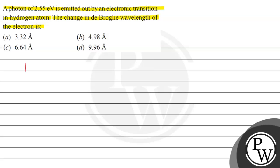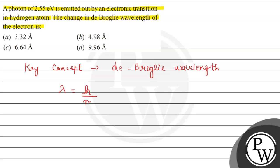Let us discuss the concept of this question. The concept here is the De Broglie wavelength — we have to find the change in the De Broglie wavelength. According to the De Broglie hypothesis, matter has both particle nature as well as wave nature. According to the wave nature of the particle, it is quantified by the De Broglie wavelength, defined as lambda equals H over MV.